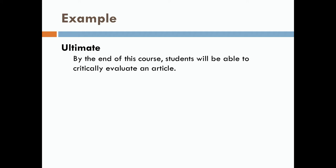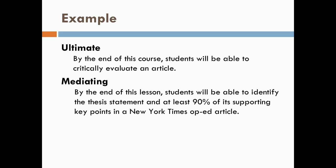Here are some examples. An ultimate learning AIM may be: by the end of the course, students will be able to critically evaluate an article — a wonderful AIM for many courses. The mediating AIM here might be: by the end of a lesson, unit, or assignment, students will be able to identify the thesis statement and 90% of its supporting key points in a New York Times op-ed piece.